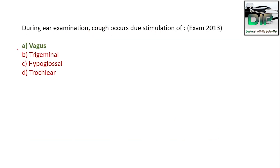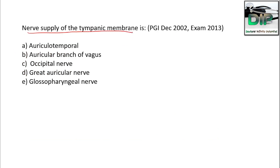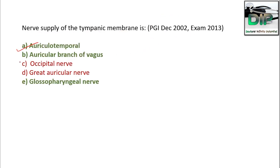During ear examination, cough occurs due to stimulation of which nerve — vagus, trigeminal, hypoglossal, or trochlear? It is the vagus nerve. Nerve supply of the tympanic membrane: auriculotemporal nerve, auricular branch of vagus, and glossopharyngeal nerve — asked in PGI December 2002/2003.